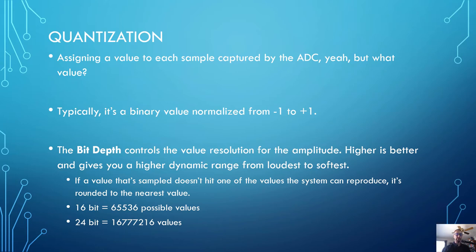The bit depth controls the value resolution for the amplitude. Higher bit depth is better and gives you a higher dynamic range from the loudest to softest values that can be reproduced by the system. If a value that's sampled doesn't hit one of the values the system can reproduce, it's rounded to the nearest value. With 16-bit audio, we get 65,536 possible values. However, with 24-bit audio, we jump up to 16,777,216 possible values of amplitude.